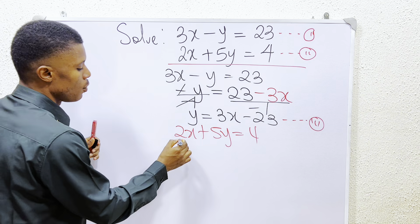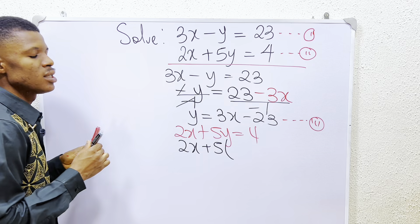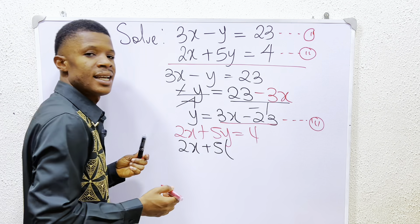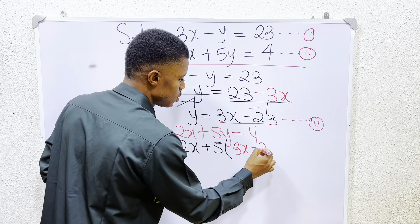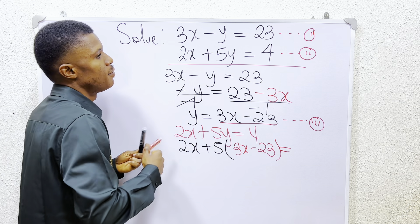So the next thing we do is to plug in value for y. We have it that 2x plus 5 into, so instead of writing y, we will now replace it with 3x minus 23. So I have 3x minus 23, and that's equal to 4.